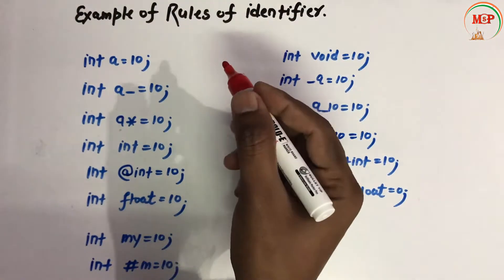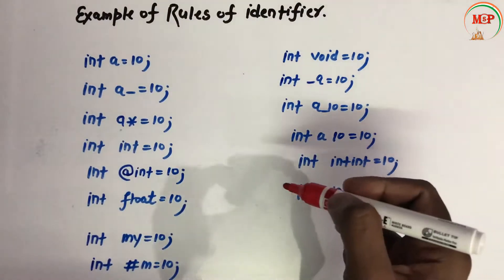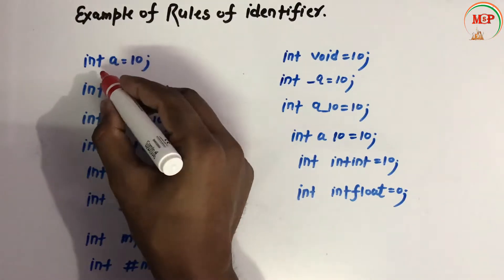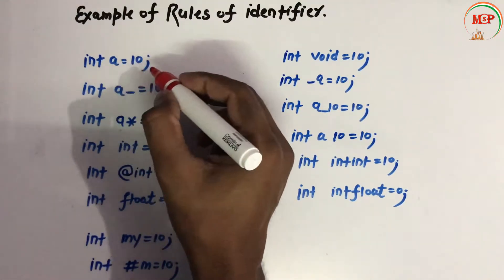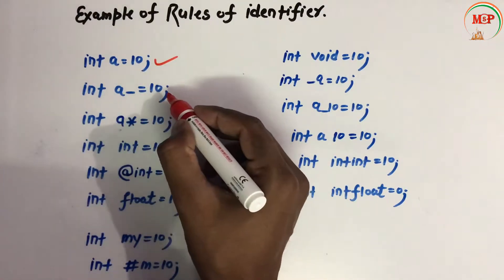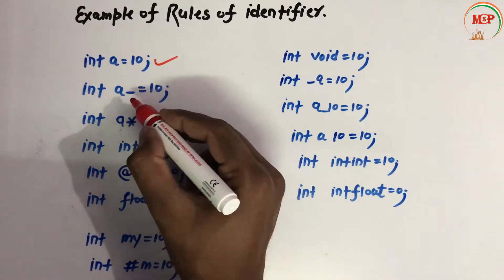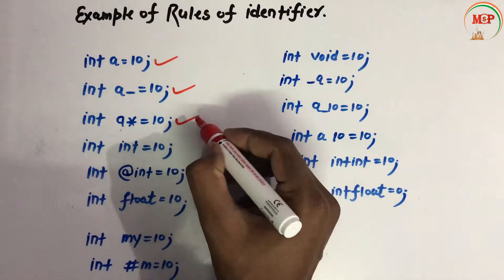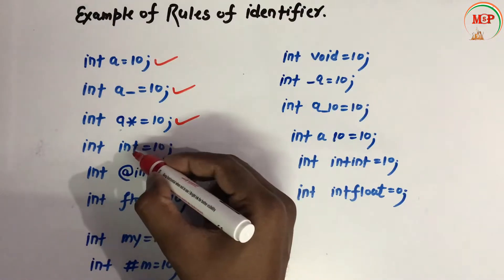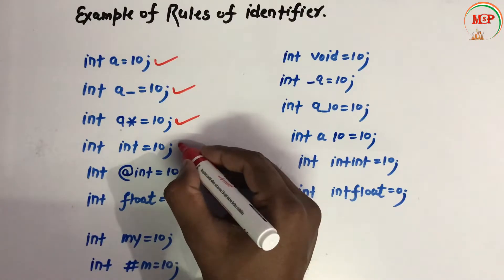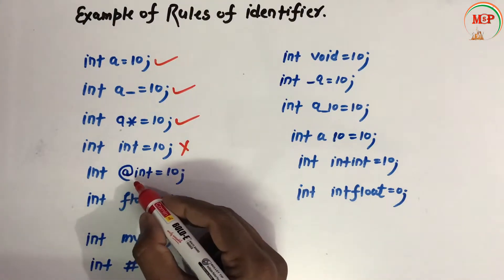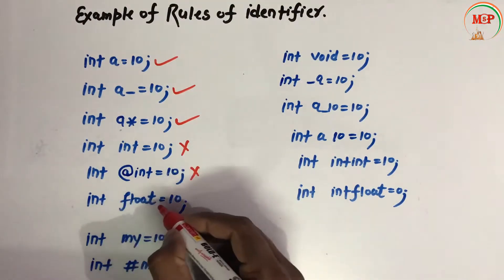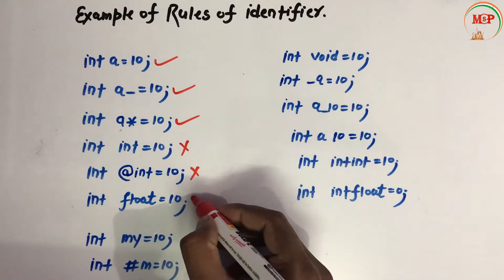Now let's see examples applying the rules of identifiers. 'int a = 10' is correct. 'int a_ = 10' is correct because underscore is allowed. 'int a* = 10' — using a special symbol like star makes it incorrect, so it is false. Using 'int' as a variable name is false because int is a reserved keyword. 'int @int = 10' is false. 'int float = 10' is false because float is a keyword.